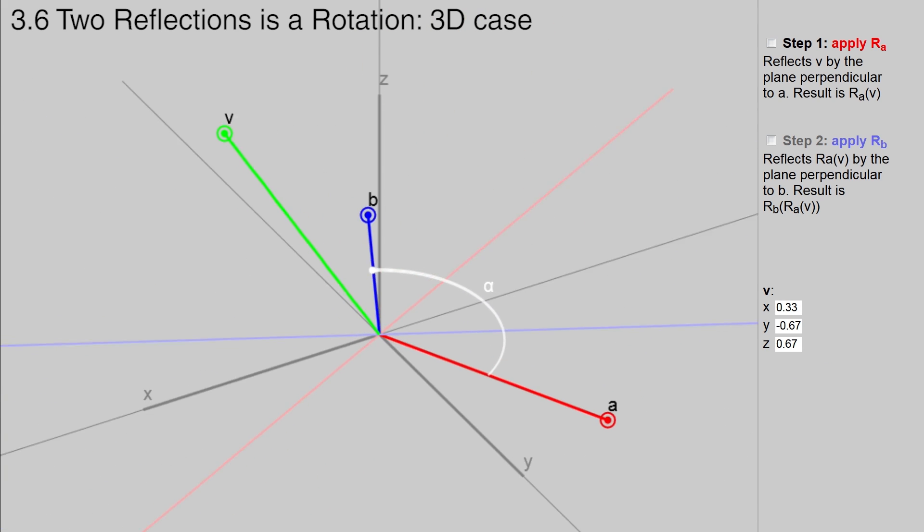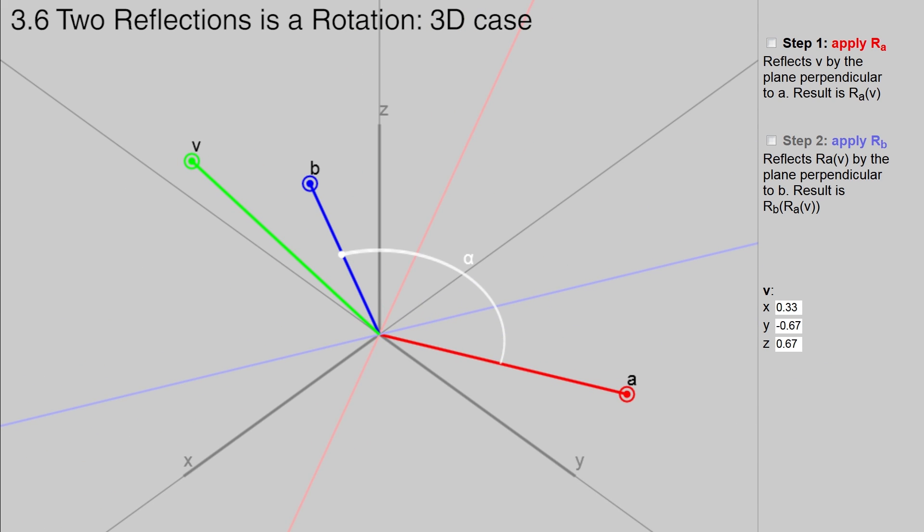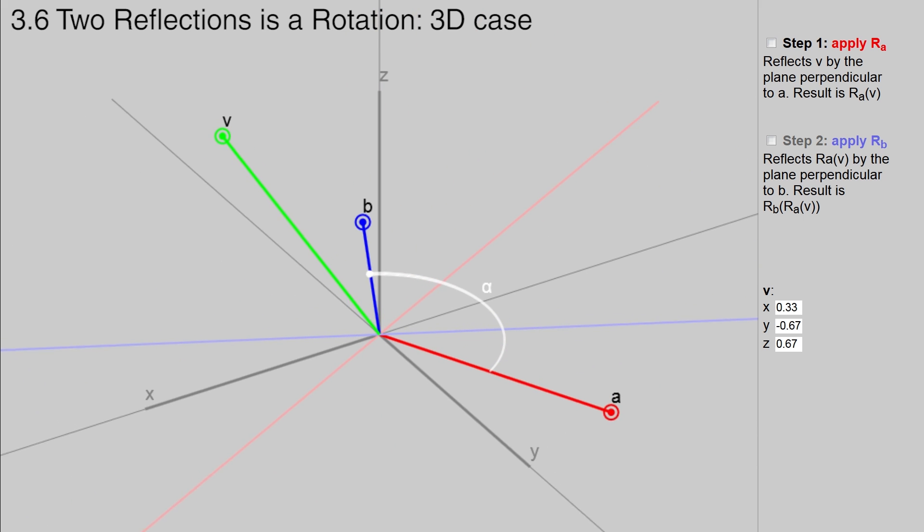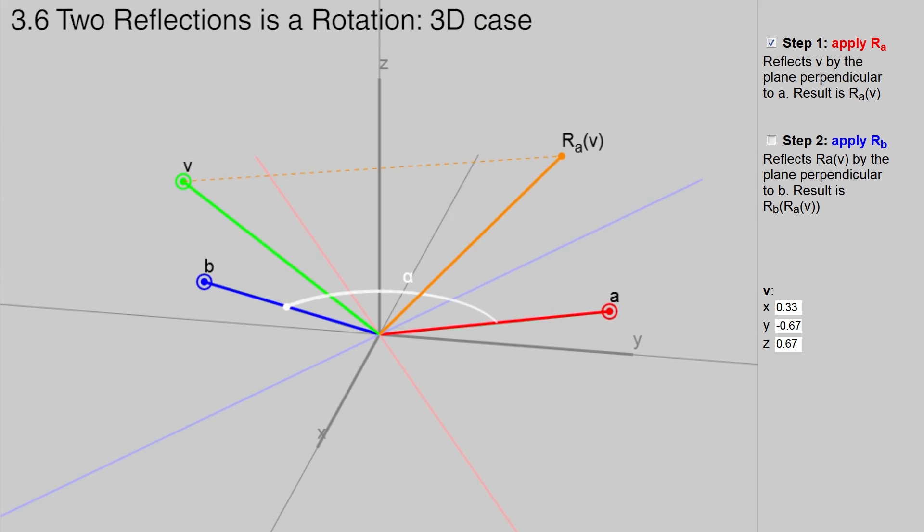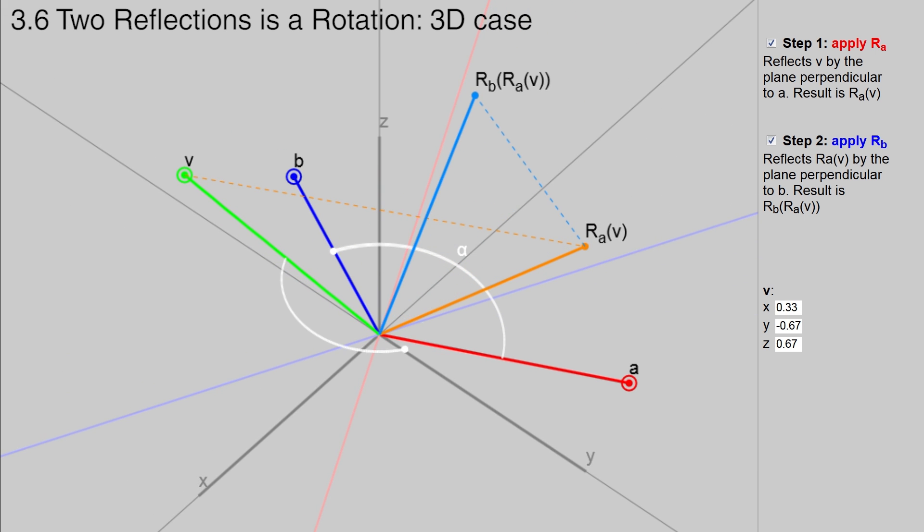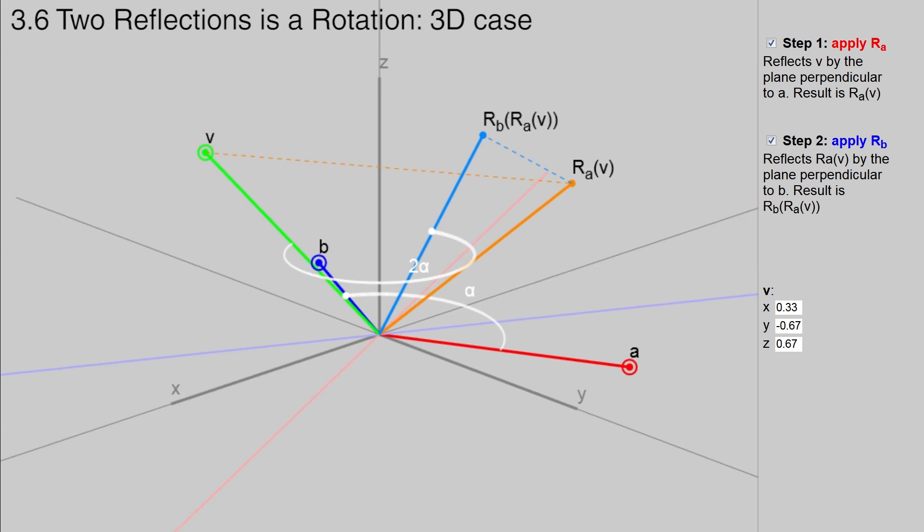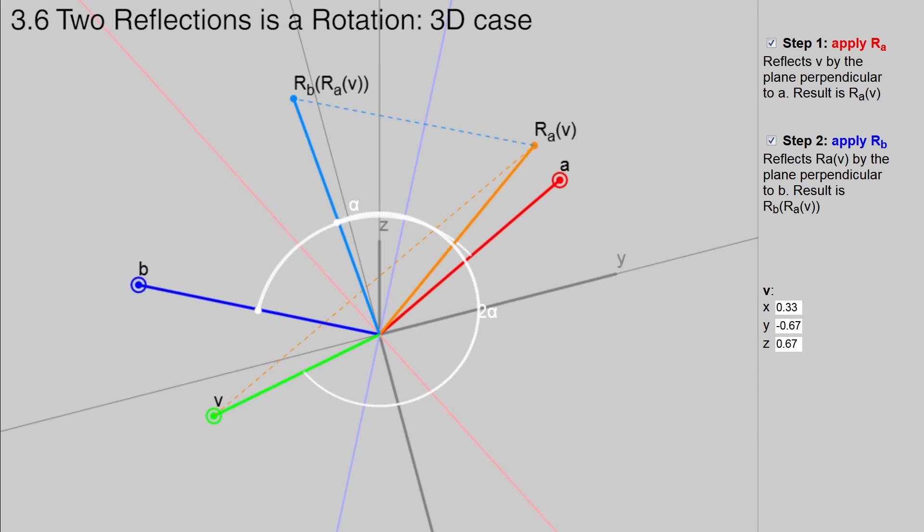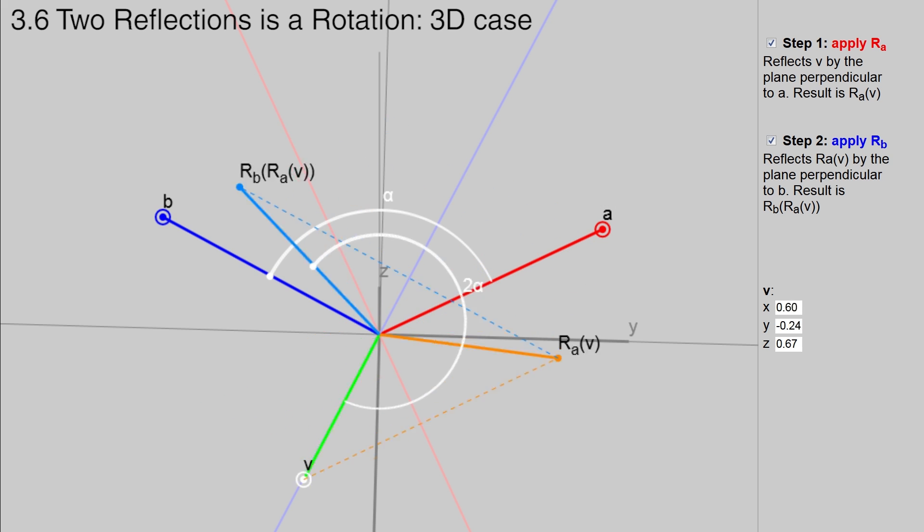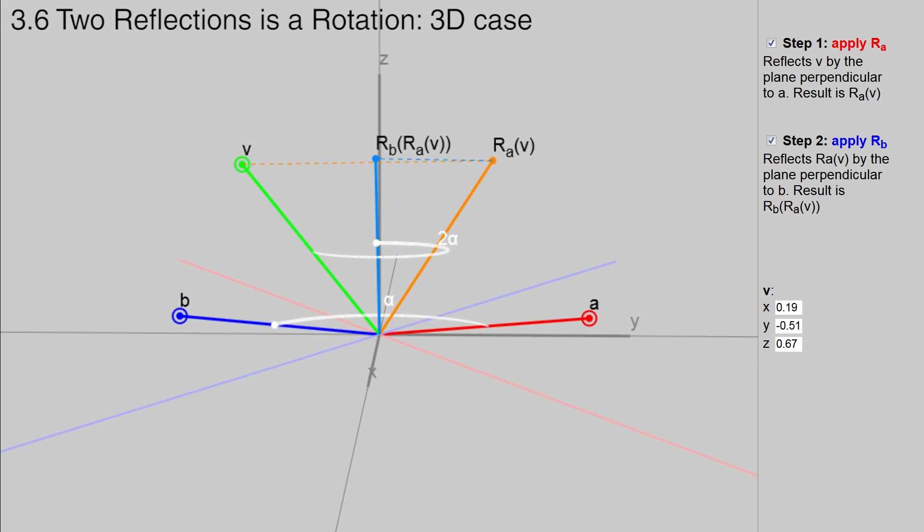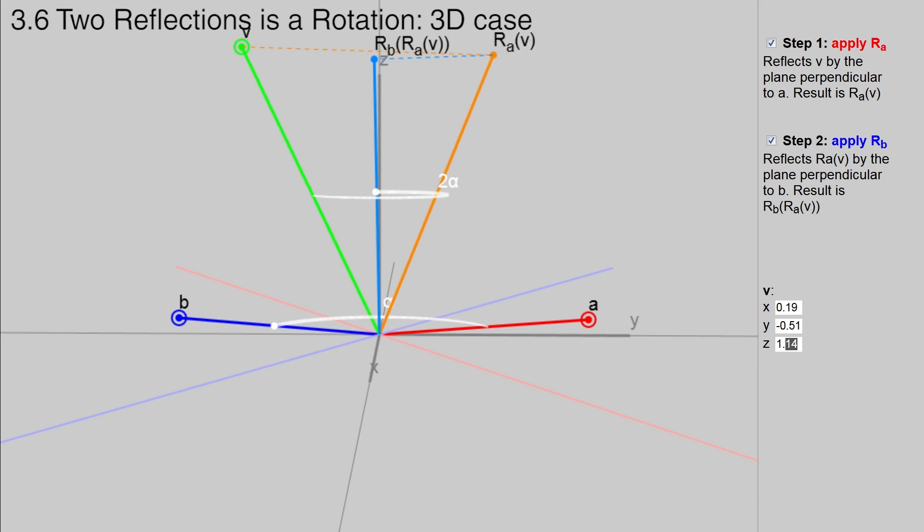In the 3D case, the vector V can be split into two different parts, one lying inside the plane defined by A and B, and one lying outside the plane. As seen here, when the vector gets reflected by each plane, its outside part stays the same. So for the inside part, we are back to the 2D case, and it just gets rotated by twice the angle.